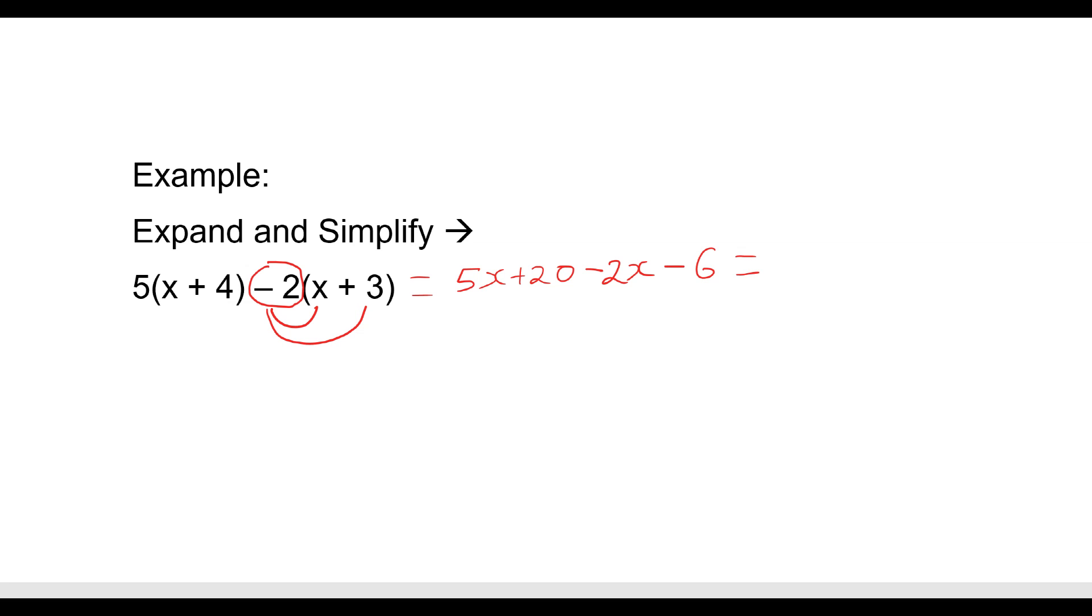We've now expanded and we now simplify. 5X take away 2X is 3X. 20 take away 6 is plus 14. So that's our answer.